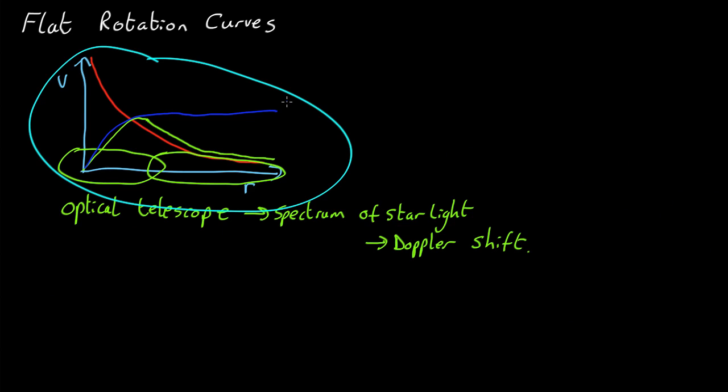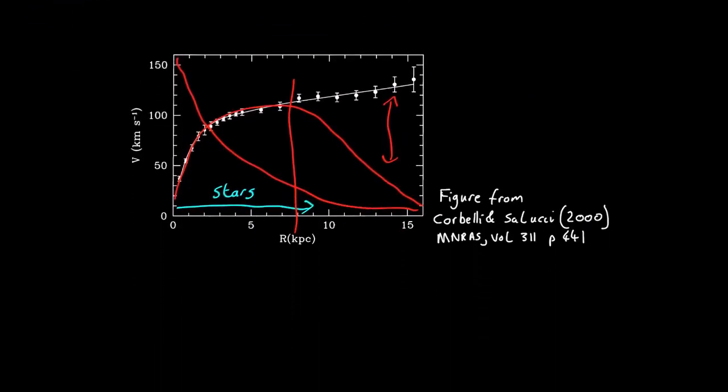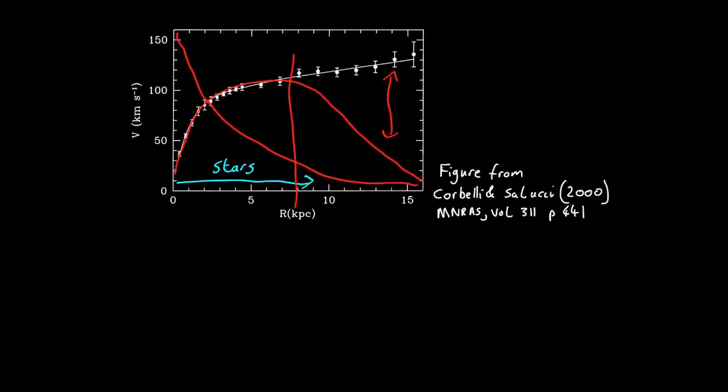So what could possibly be going on here? Well, this isn't just seen in M33. Pretty much all disk galaxies show these flat rotation curves. They rise from low values in the middle, but then they keep on flat, as far out as you can measure them.